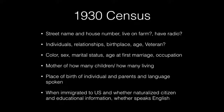The 1930 Census has the street name and house number, whether they live on a farm, whether they have a radio, the individual's relationships, birthplace, age, and whether they are a veteran. It also shows color, sex, marital status, age at first marriage, and occupation, the number of children a mother has had and how many are living, the place of birth of the individual and their parents, the language spoken, when they immigrated to the United States, whether they are naturalized citizens, educational information, and whether they speak English.